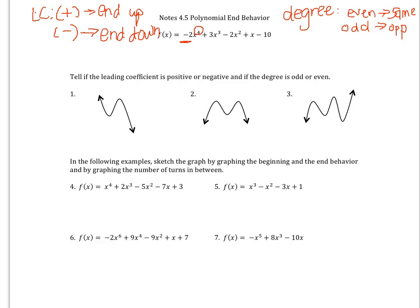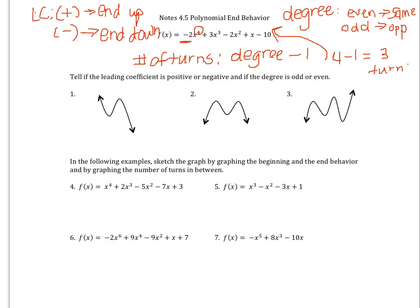The other thing we need to know is how many turns there are going to be in between the two arrows. The number of turns can be found by taking the degree of the polynomial — the highest exponent — and subtracting 1. In this example the degree is 4, so we subtract 1, meaning the graph takes 3 turns in the middle.